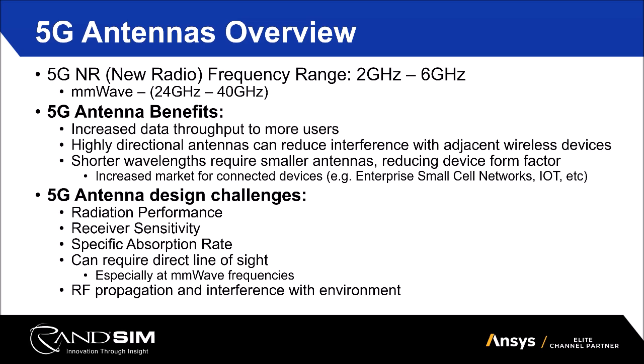Another challenge — not just for 5G but for all wireless devices near a human — is specific absorption rate. If your device is planned to be within 20 centimeters of the human body, whether that's the head, torso, hand, or any part of the body, you'll be subjected to SAR, which measures how much energy is actually getting absorbed into your body and converting into heat. Additionally, especially at millimeter wave frequencies, a direct line of sight is often required, and multipath can become problematic. Simulation with ANSYS can help understand how signals propagate within the environment.